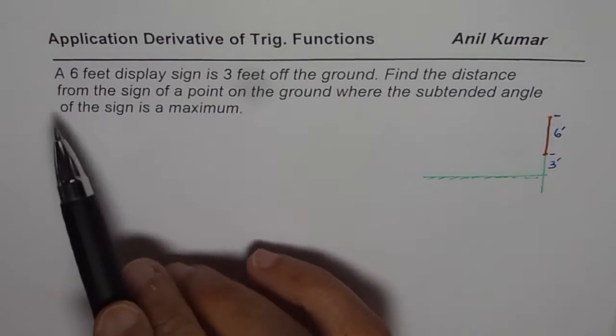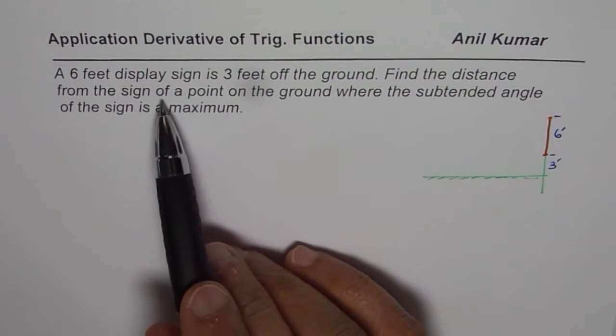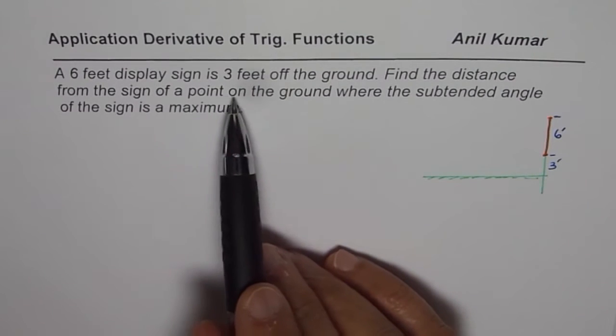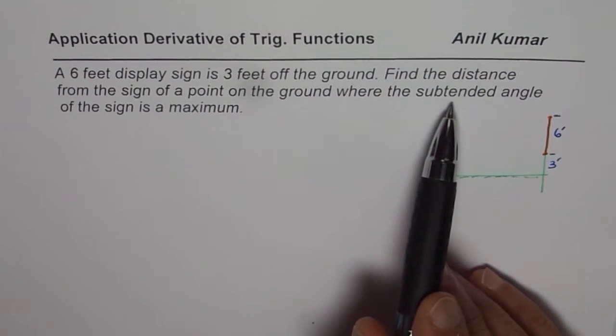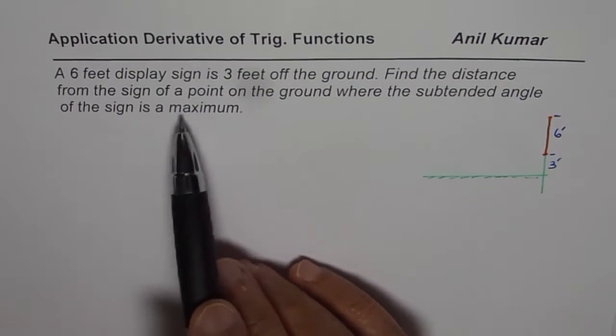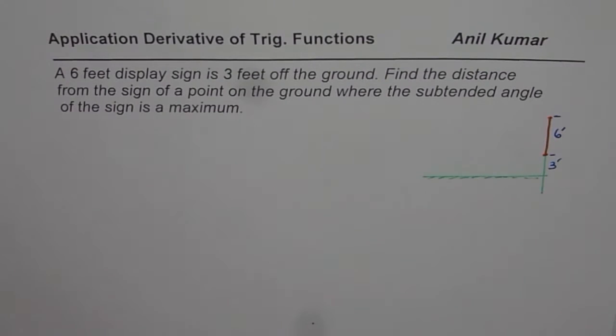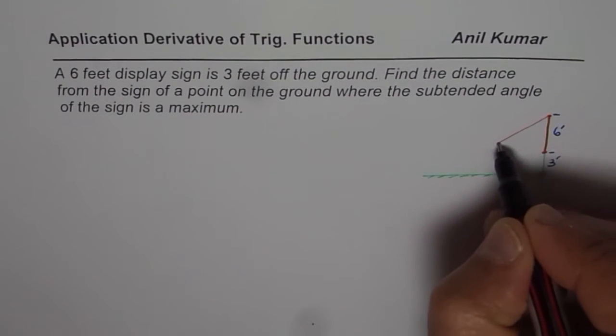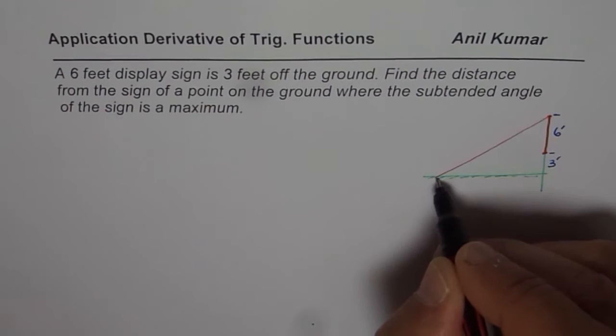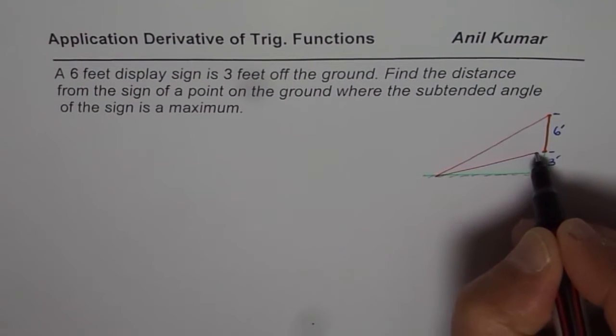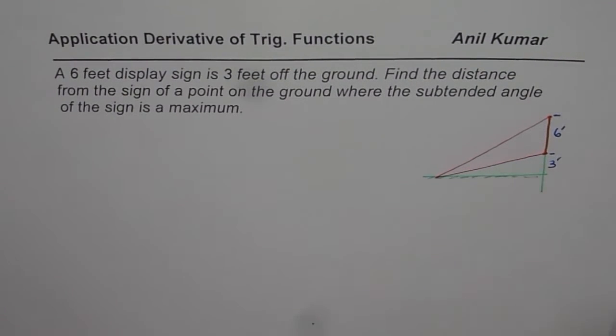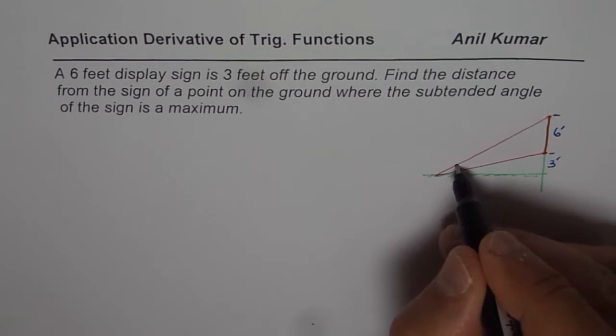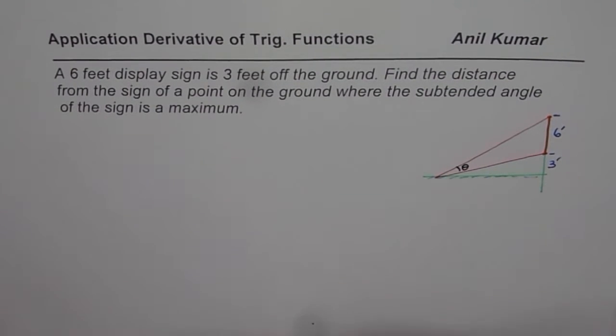Find the distance from the sign of a point on the ground where the subtended angle of the sign is maximum. So what we need to find is a point on the ground somewhere on this ground where the angle which this picture makes is maximum. So we are looking for the angle theta, let's say, to be maximum.